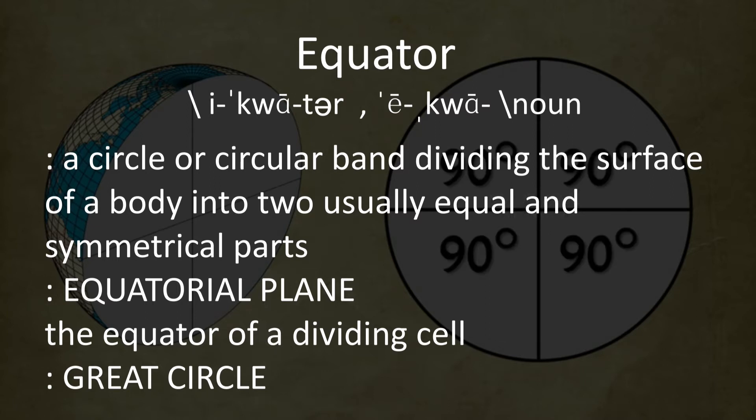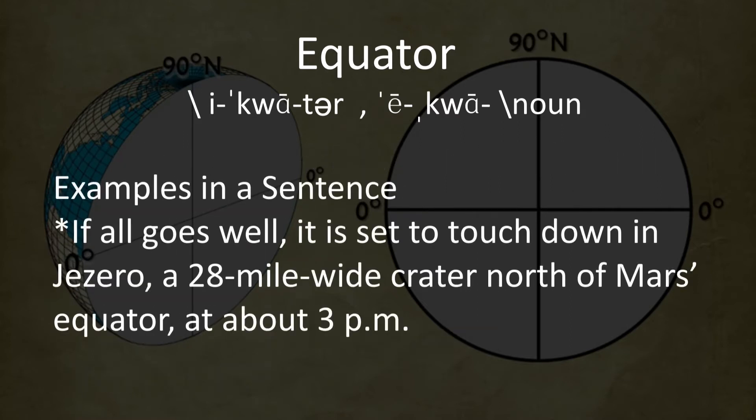Equatorial plane. The equator of a dividing cell. Great circle. Examples in a sentence: If all goes well,